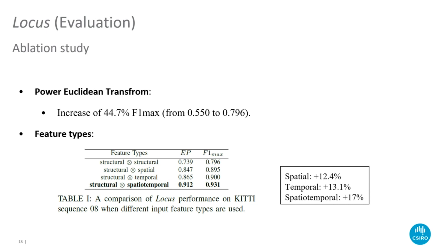Inclusion of the power Euclidean transform after second-order pooling shows a dramatic increase of 44.7% F1 max. Further investigating the influence of feature types, table 1 shows that encoding complementary information leads to an increase in the final performance, where the best performance is obtained by incorporating both topological and temporal information.